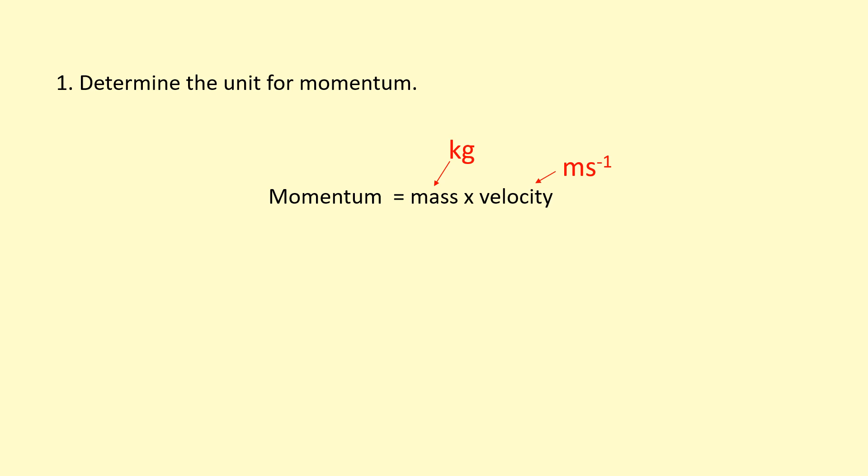So momentum doesn't have a special unit, you can just get it by combining these two units for mass and velocity. The unit for momentum is kilogram meters per second.